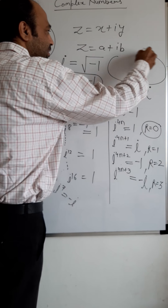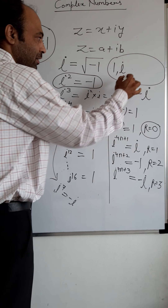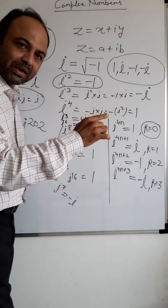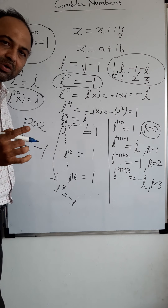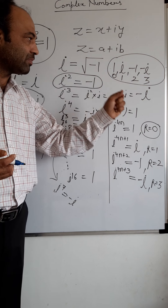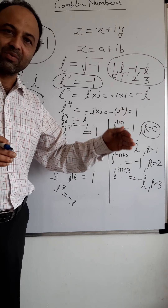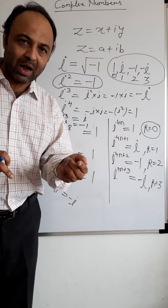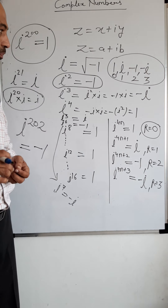Here is a tip to remember: the cycle is 1, i, −1, −i corresponding to remainders 0, 1, 2, 3 when dividing the power by 4. Put these on your fingers: 1, i, −1, −i with remainders 0, 1, 2, 3. This is one easy way to quickly calculate the values of i for any power.